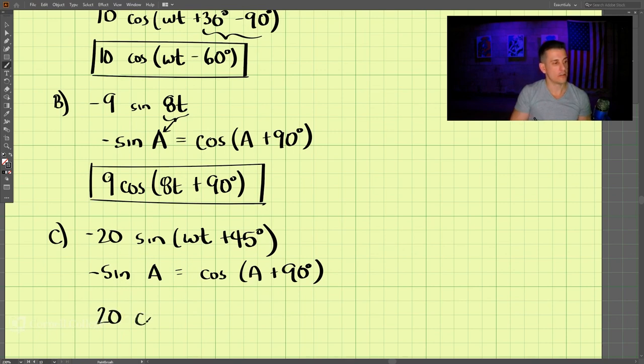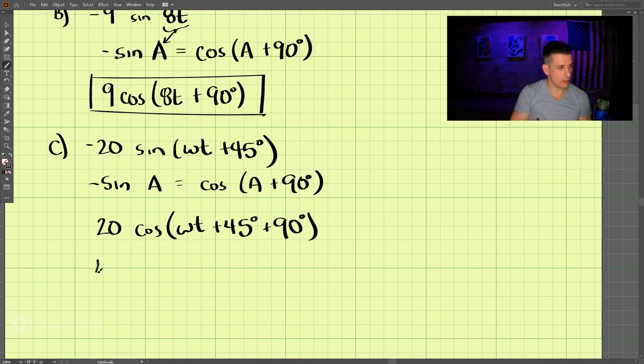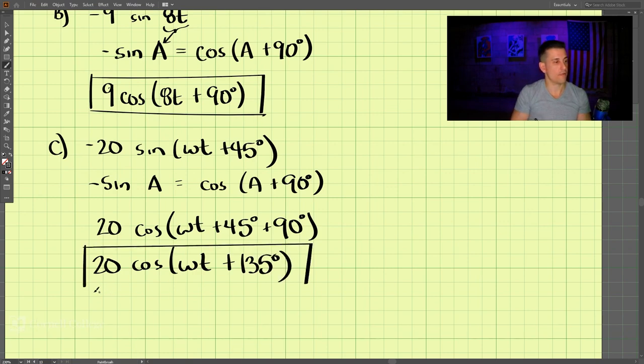So we come out with 20 cosine of omega t plus 45 degrees plus 90 degrees. If we simplify that, we end up with 20 cosine omega t plus 135 degrees. That is our solution for part c.